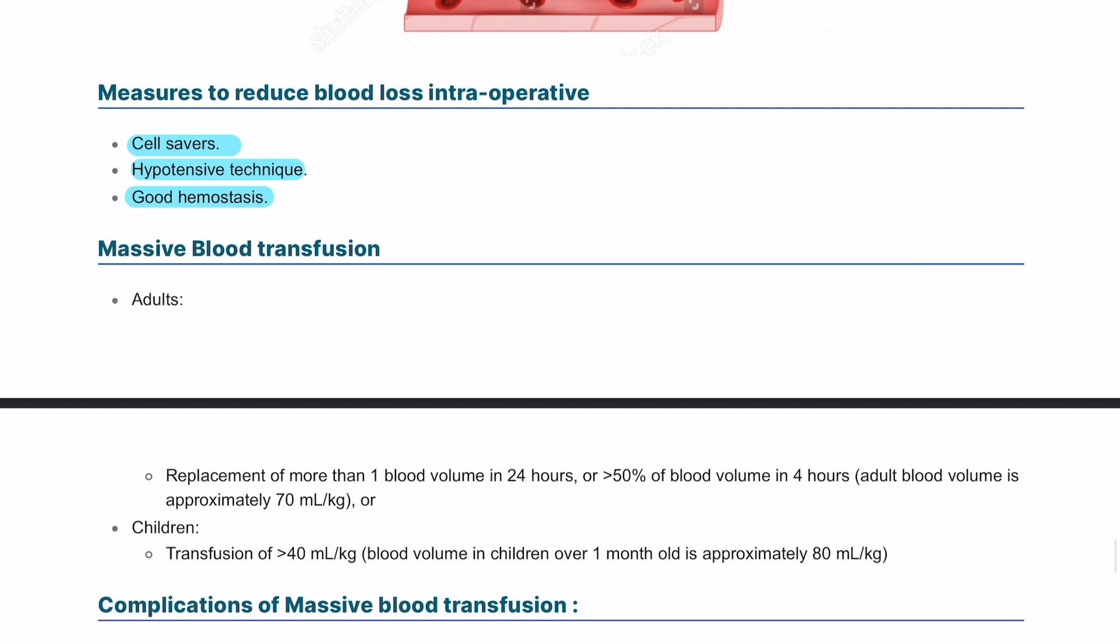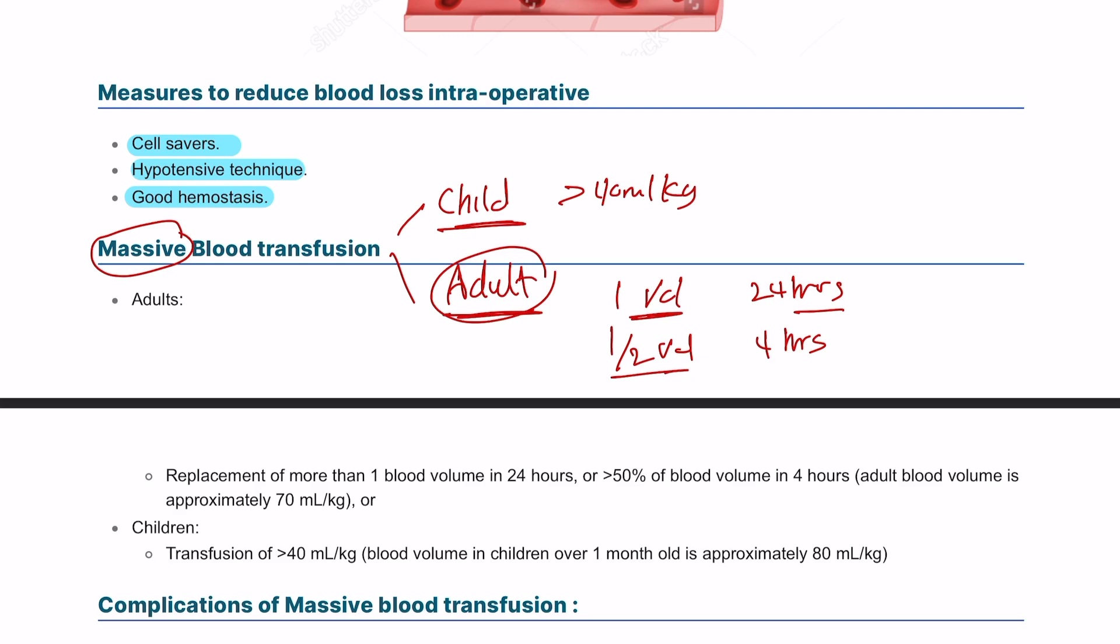Massive blood transfusion: it's important to divide it into massive blood transfusion in a child and in an adult. In an adult, we're transfusing one volume of the blood in 24 hours or half volume in 4 hours. In a child, if you're transfusing more than 40 ml per kg in any child over a month, that is massive blood transfusion.